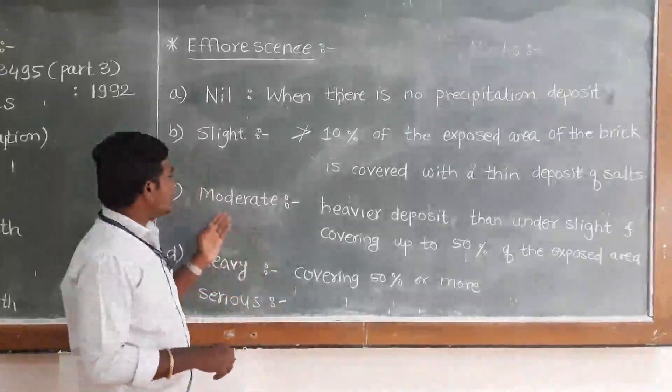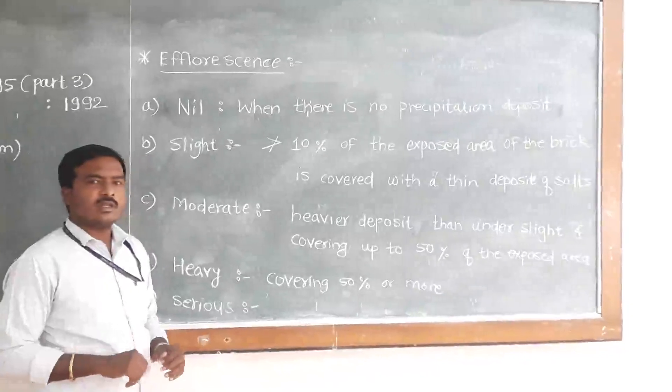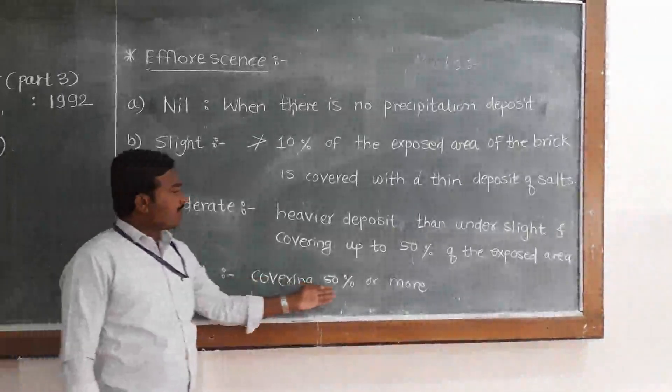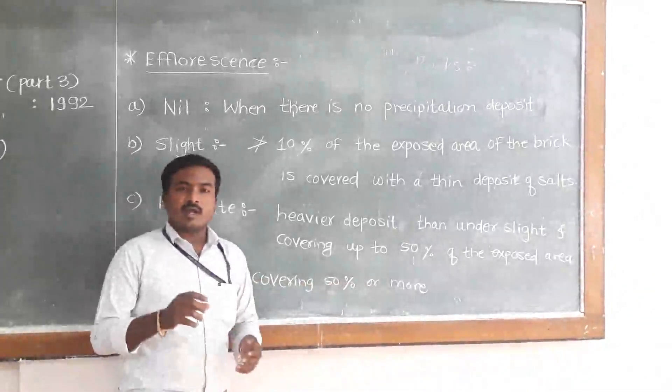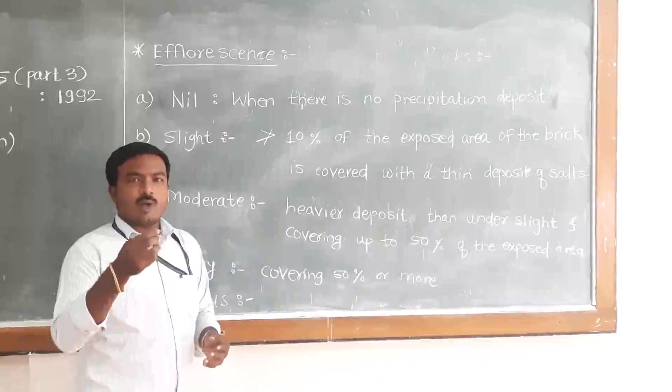When that whitish precipitate covers 50% or more area but there is no powder or flaking of that surface, then that is heavy efflorescence.